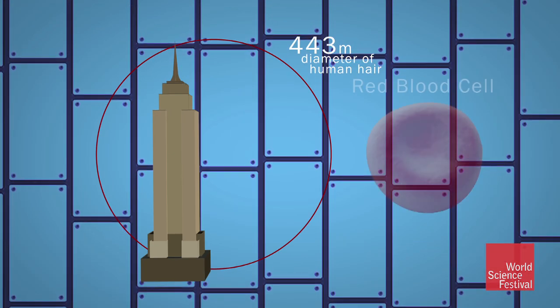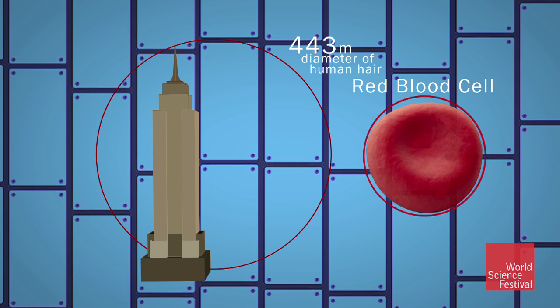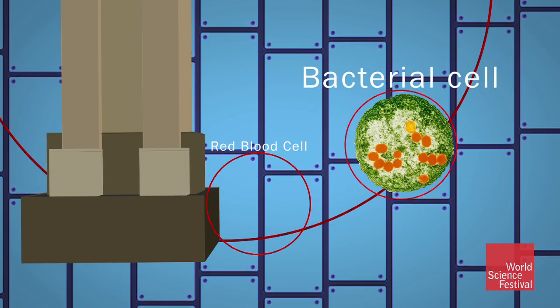A typical human cell, say a red blood cell, would rise to the tenth floor. A bacteria cell, the third floor.